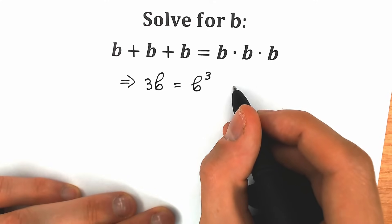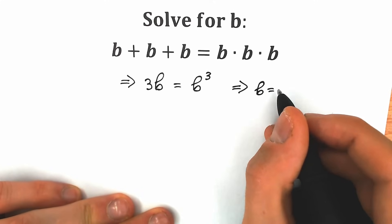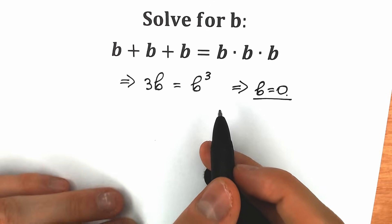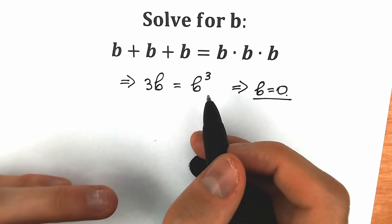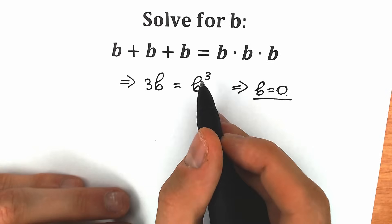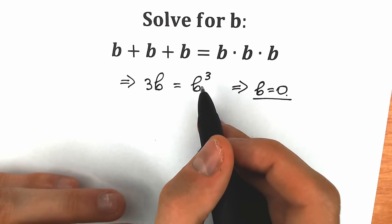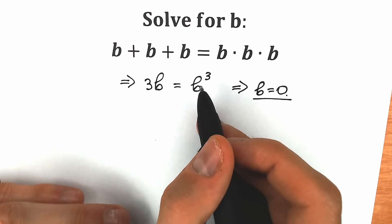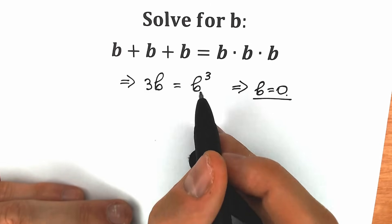A lot of students make this common mistake — they say that from here b is equal to zero, because this is the obvious solution, and they say they completely solved this question. But don't forget about the fundamental theorem of algebra. If we're talking about the third power, we need to consider that we have three roots in total. We don't know about real or complex solutions — we're talking about three roots. We found only one, so let's try to find the others.